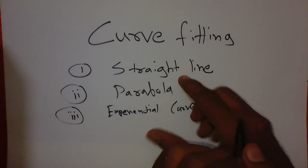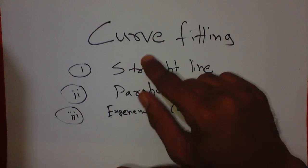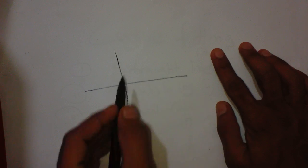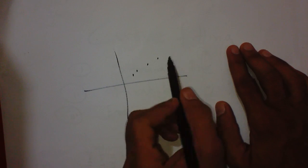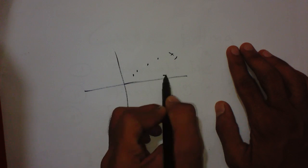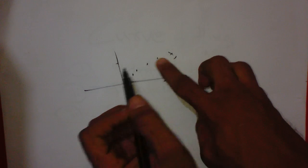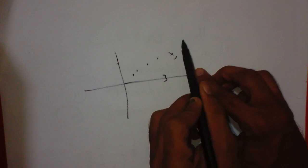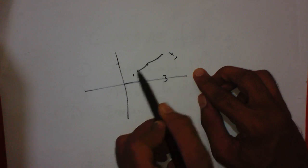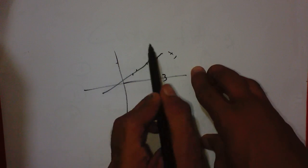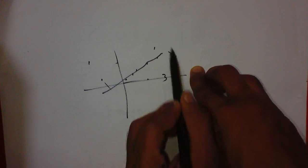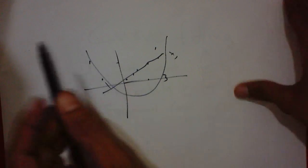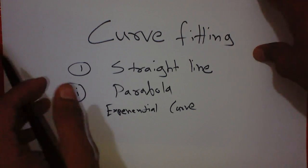Let's start with fitting a straight line. Let me introduce what curve fitting is. On a graph, they give us certain points — for example, x and y values like (3, 2) and some other points — and we have to find a line that closely passes through these points. That is curve fitting. For a parabola, they give similar points and we find a curve.